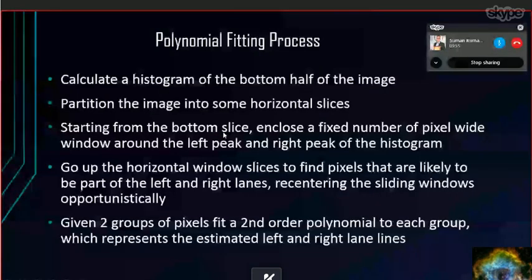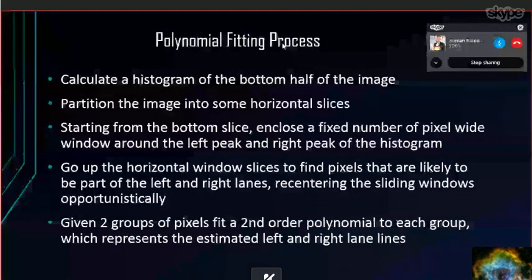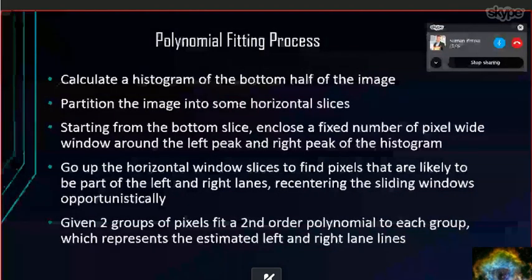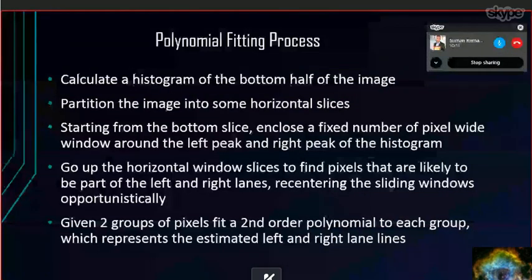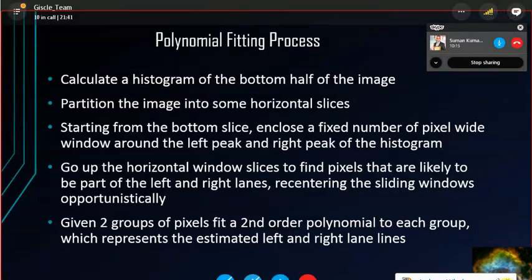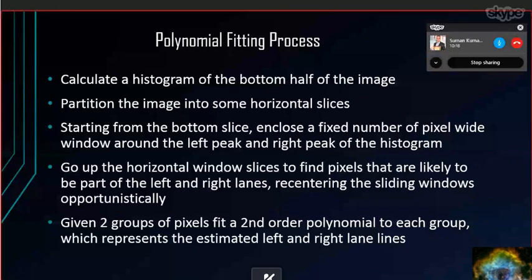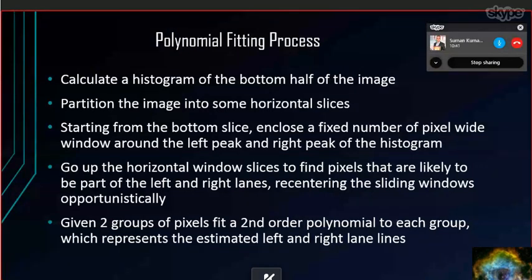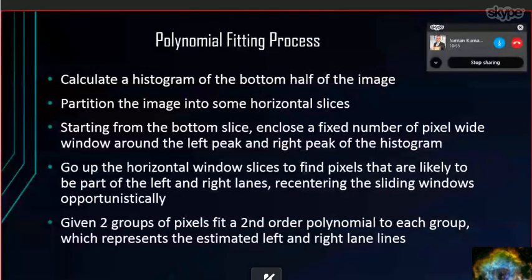Here's the polynomial fitting process. First I calculate the histogram of the bottom half of the image, then partition the image into horizontal slices. My basic idea is to take a video frame, slice it into fixed horizontal slices, and detect the pixels correlated to the lane marks. I use a sliding window method for pixel detection using those colors, collecting the pixels that contribute to the lane marks. Then in those horizontal slices I join all those pixels and fit a second-order polynomial to get the whole curve length.